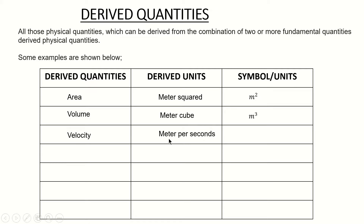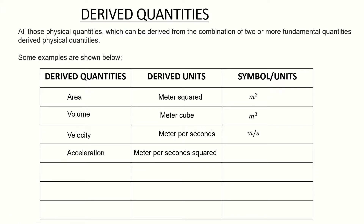Next we have velocity. The unit for velocity is meters per second. It has two base units: meters and seconds, giving meters per second, so velocity is a derived quantity. Next is acceleration — the unit is meters per second squared. It is again a combination of meters and seconds, so acceleration is also a derived quantity.